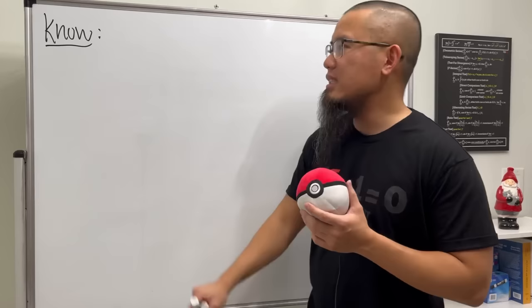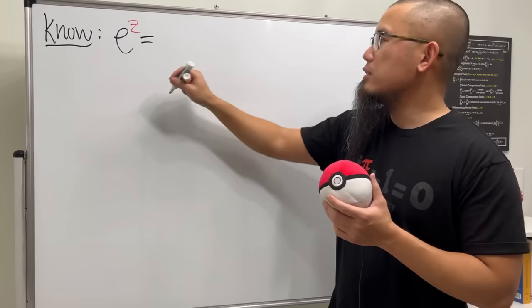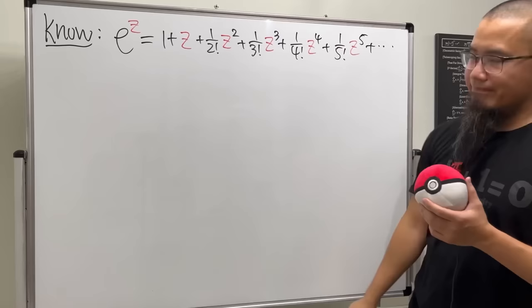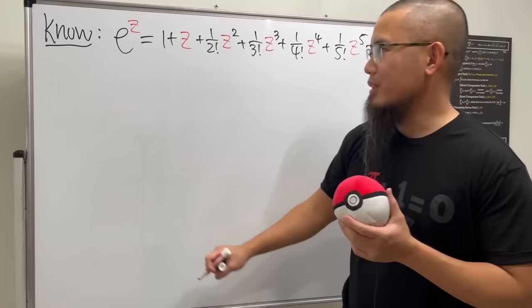So let's take a look at e to the z. And let's look at its expanded version. This right here is equal to 1 plus z. And the next one is plus 1 over 2 factorial. And then we have z squared. And then plus 1 over 3 factorial z to the third power. And then plus 1 over 4 factorial z to the fourth power. And then plus 1 over 5 factorial z to the fifth power. And the beauty for this one is that we can plug in anything that we want. So this is what we're going to do.